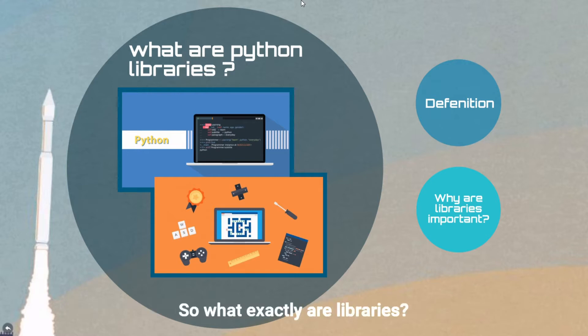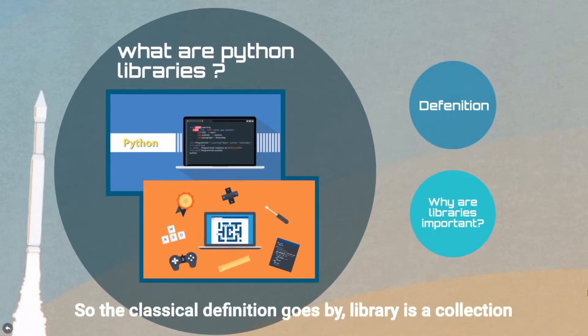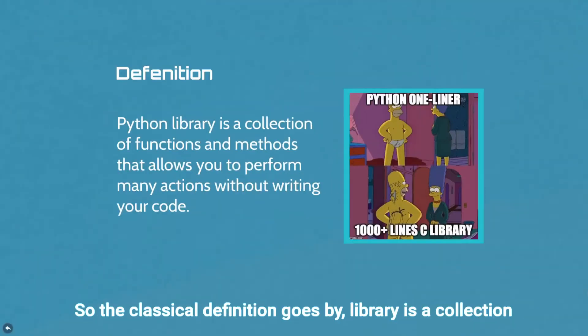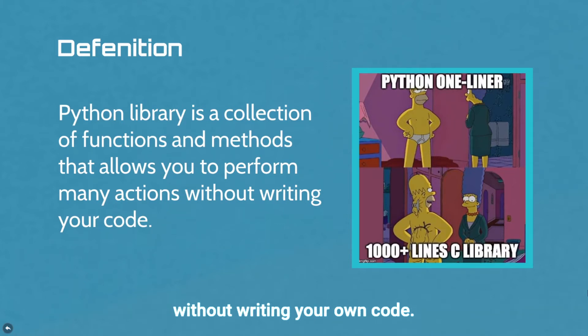So what exactly are libraries? The classical definition goes: a library is a collection of functions and methods that allows you to perform many actions without writing your own code.